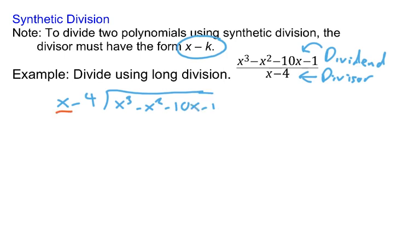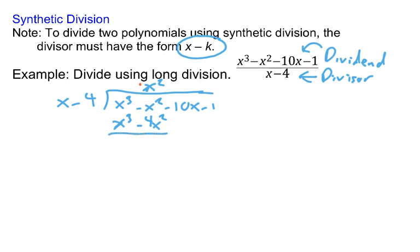You ask yourself: how many times does x divide into x cubed? That gives you x squared. You line up the x squared terms, then ask what happens when you multiply x squared by x minus 4. x squared times x is x cubed, and x squared times negative 4 is minus 4x squared. Then you subtract these two lines — an easier way is to change the signs in the second polynomial and add. So x cubed minus x cubed is 0, and minus x squared plus 4x squared is 3x squared.